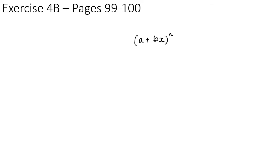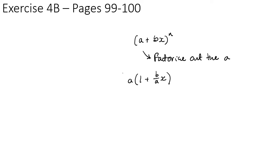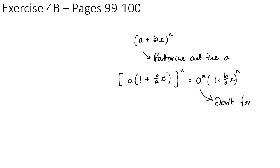You should now be able to do Exercise 4B on pages 99 to 100. To summarise: when you have something like (a + bx)^n, first factorize out the a to get a^n × (1 + (b/a)x)^n, do the binomial expansion on the bracket, and don't forget to multiply by a^n at the end.